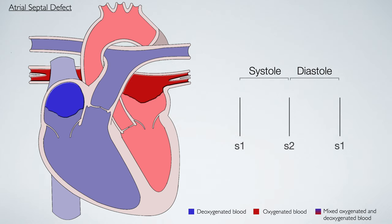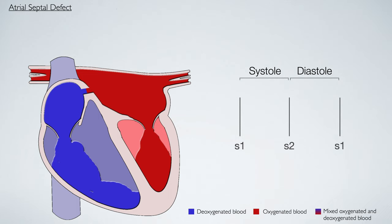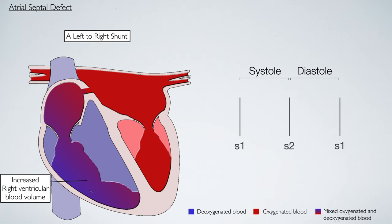It is during diastole where we see most of the action with the atrial septal defect. Blood flows from the atria into the ventricles. Blood pressure in the left side of the heart is naturally higher than that in the right side, and this produces a pressure gradient that allows blood to flow from the left atrium into the right atrium. This is known as a left-to-right shunt, which allows an increased volume of blood to enter the right atrium and subsequently the right ventricle.